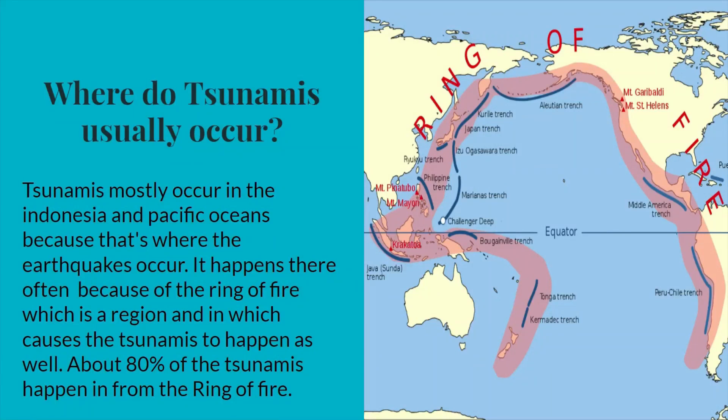Where do tsunamis usually occur? Tsunamis mostly occur in the Indonesia and Pacific Oceans because that's where the earthquakes occur. It happens there often because of the Ring of Fire, which is located on this map, which is a region that causes tsunamis to happen as well. About 80% of the tsunamis happen from the Ring of Fire.